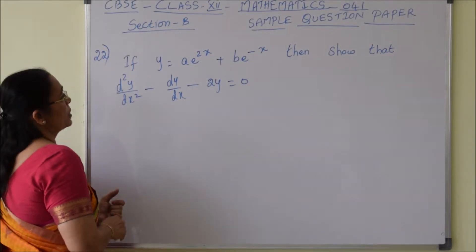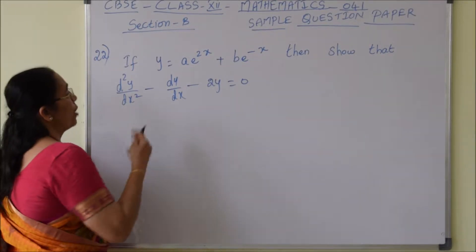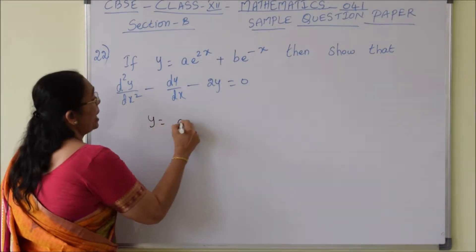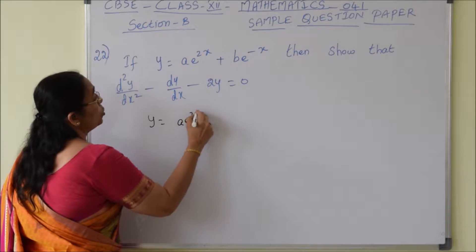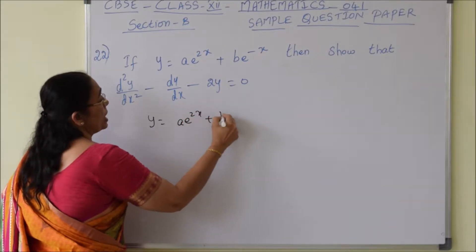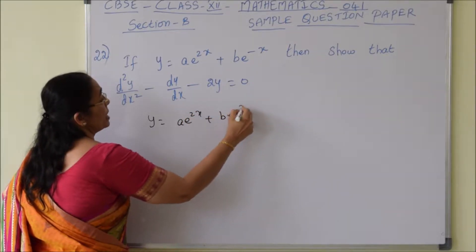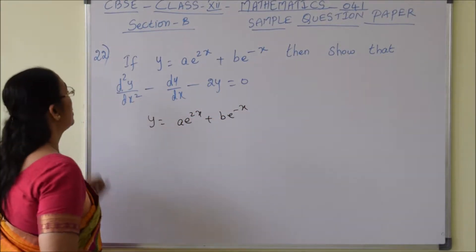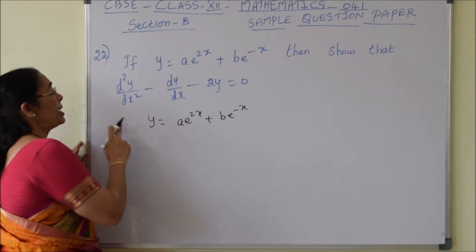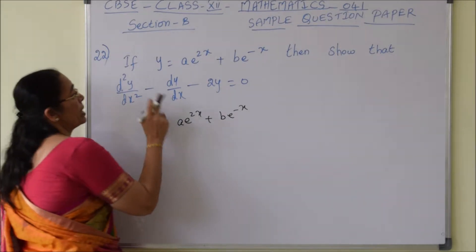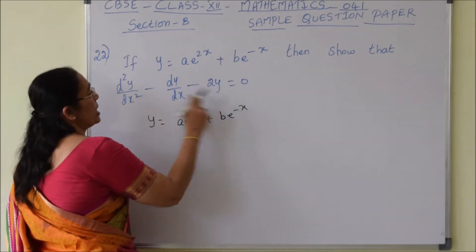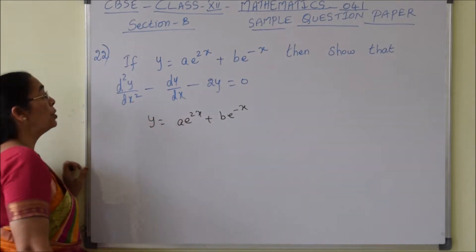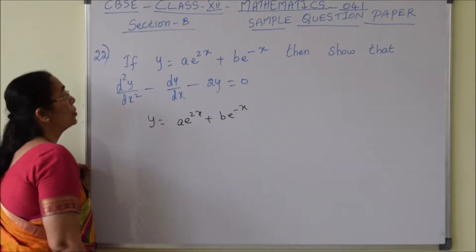Twenty-second question: if y equals ae^(2x) plus be^(-x), show that d²y/dx² minus dy/dx minus 2y is equals to 0.